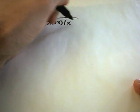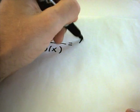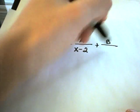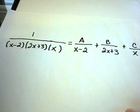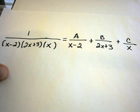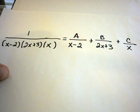Another example: 1 over (x minus 2)(2x plus 3)(x). All three are linear factors, so you break it up as A over (x minus 2), plus B over (2x plus 3), plus C over x. The goal is to find values A, B, and C such that when you get common denominators and simplify, you get back the original numerator 1. We'll cover finding those values in a separate video.